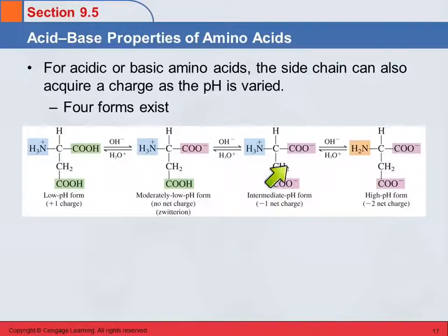And so now we'll end up with a negative one net charge. If we continue to add hydroxide, then we'll also deprotonate this group. So now we've got more combinations that are possible. Four different forms are possible. And you can do this with all of the acidic and basic ones. Any questions?